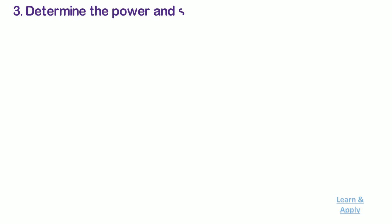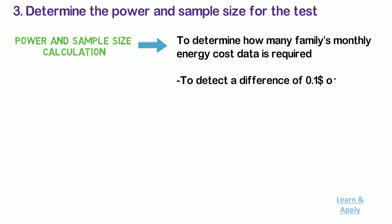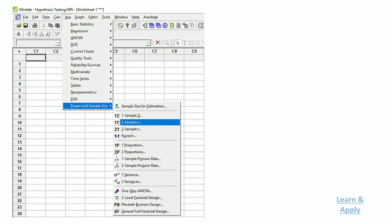Step 3: Determine the power and sample size for the test. The economist uses a power and sample size calculation to determine how many families' monthly energy cost data is required to measure to have a good chance of detecting a difference of $0.10 or more from the target. To find the sample size, he followed the procedure.